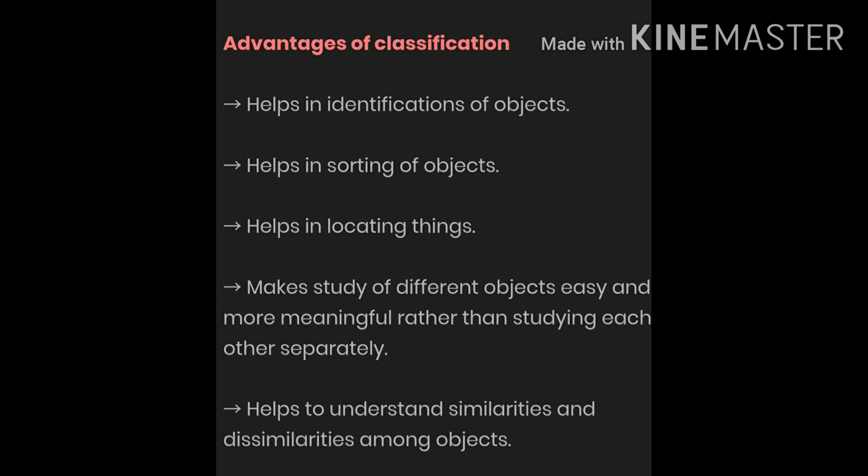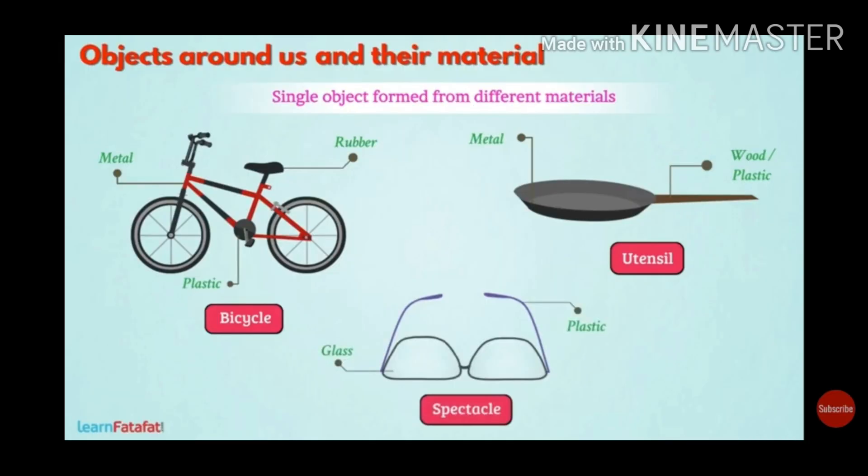The advantages of classification are that we can save time and conveniently study different materials and substances — living or non-living. In scientific study, it is convenient to study different types of species. Classification helps us identify substances depending upon similarities and dissimilarities, making our busy life easier and more convenient.